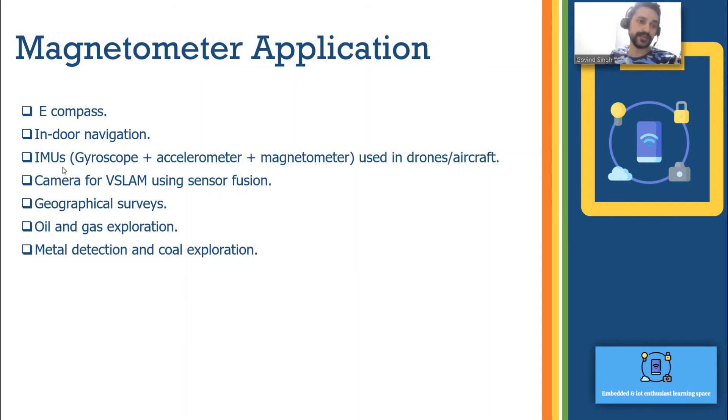Another thing is the IMU which is like inertial measurement unit which is being used in aircrafts, UAVs, which is having a combined package with gyroscope, accelerometer and magnetometer. Cameras are using for SLAM using sensor fusion.